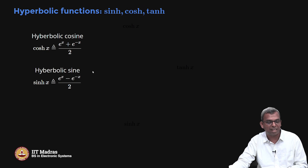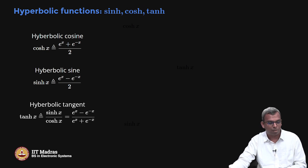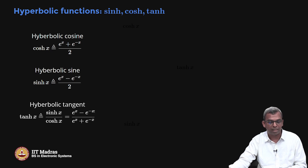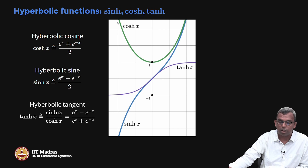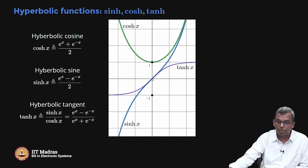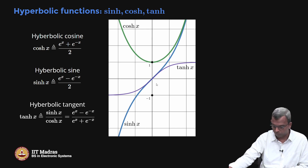Now we can also do tanh. Hyperbolic tangent is sinh over cosh. If you write it in terms of exponentials, it is [e^x − e^(−x)] / [e^x + e^(−x)]. Tanh has wonderful properties as well. Here is a plot of all three: cosh is even with minimum value 1, always above 1, shaped like a parabola. Sinh is odd, going to minus infinity and plus infinity. Tanh stays between minus 1 and 1 with a smooth shape.